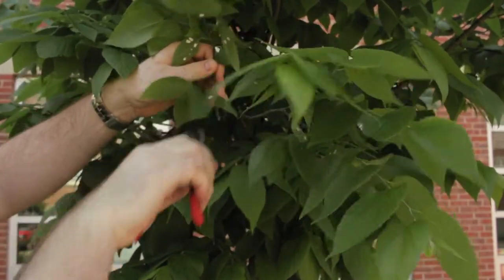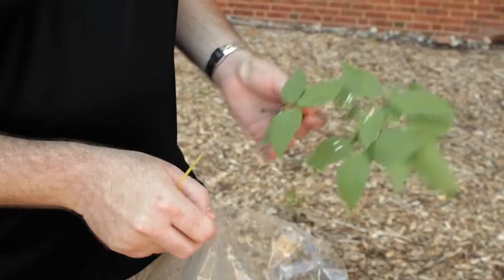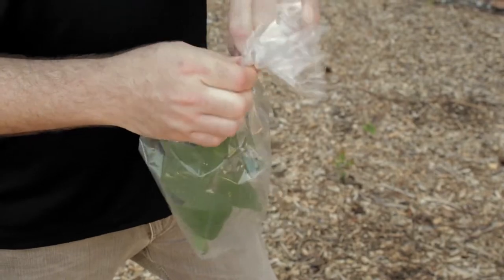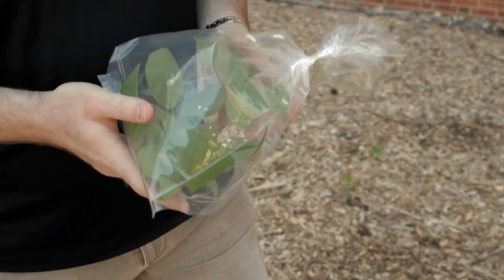First, cut a branch off containing the insects, place it in a bag, and tie the bag together. Send in the entire sample in a bag with the insects included.